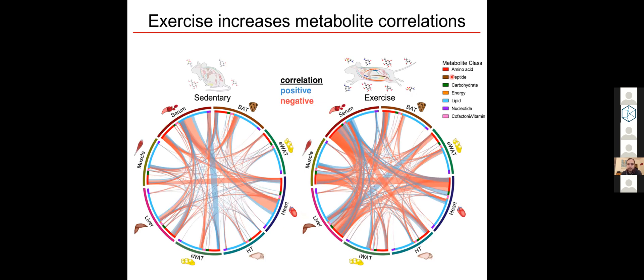Perhaps not surprisingly, exercise does increase this metabolite coordination between the tissues, suggesting increased tissue coordination and communication. And this was mostly driven, you see here, by these increased connections between the liver and the muscle and the serum especially.